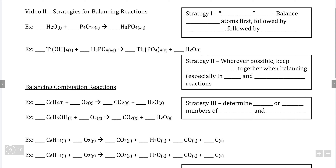Now that you've been introduced to the theoretical justification behind why we balance chemical reactions, it's time to look at some strategies for how to balance the more difficult or cumbersome chemical reactions. In the first two reactions, we can see that we have a large number of individual atoms, and often the hardest thing to do is figure out where to start.